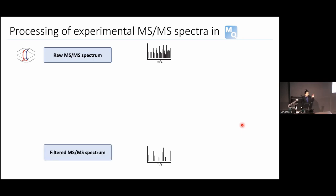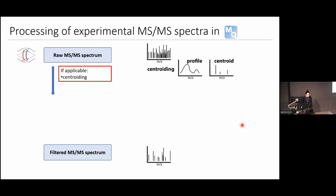We want to go from this very populated MS/MS spectrum to a filtered one where we only keep peaks important for peptide identification. The first processing step is centroiding. The mass spectrometer can collect data in two modes: centroid mode or profile mode. When you load the files into MaxQuant, the first thing it does is convert profile mode to centroid mode. If the raw files were already in centroid mode, it skips this step.